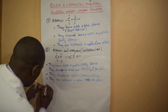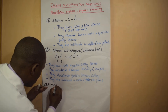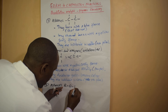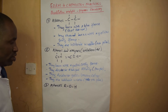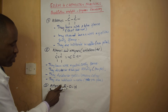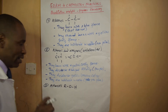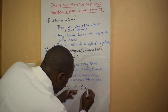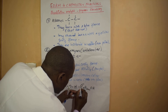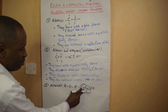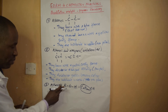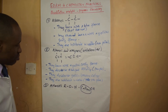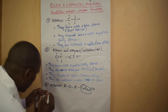Now let's move to the alkanols. The alkanols are represented by ROH. The general formula of an alkanol is CnH(2n+1)OH — the CnH(2n+1) part is represented by R in the ROH notation.